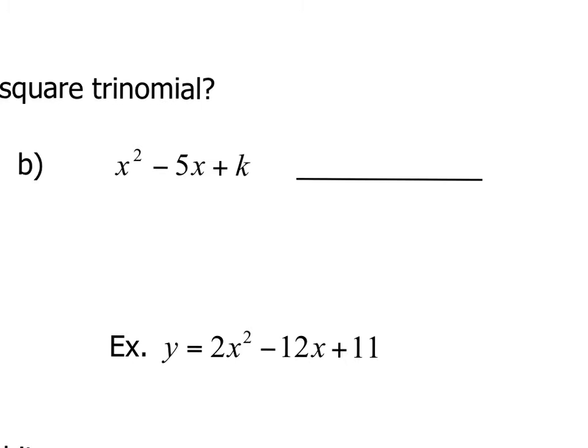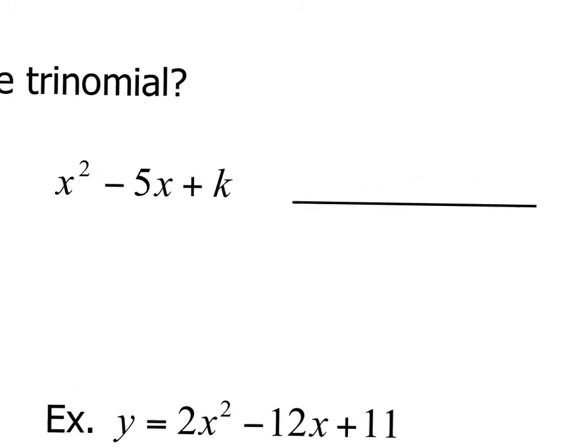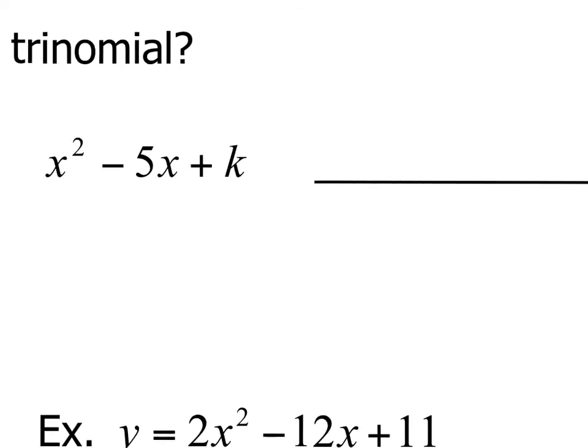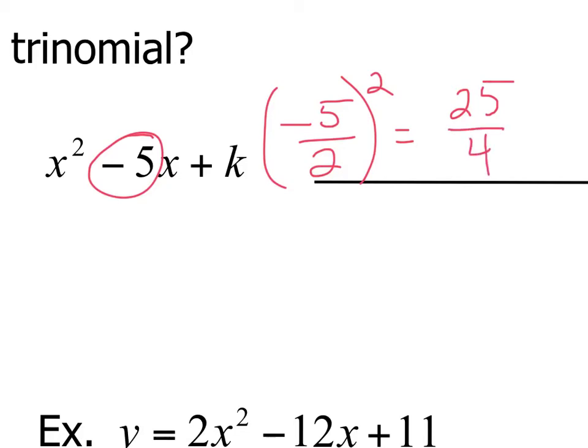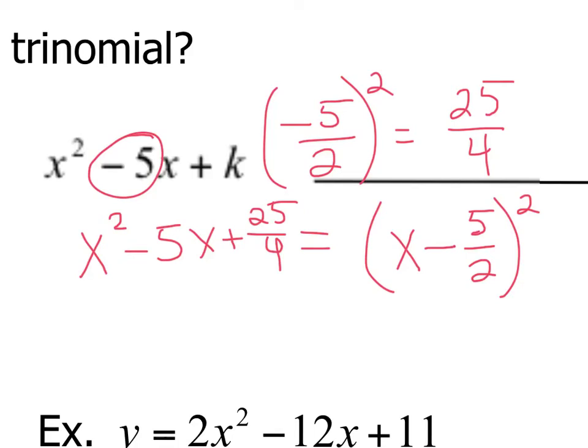Here we've got x squared minus 5x plus k and this isn't as nice as the question before but the process is the same. So we take our b value. So we go minus 5 and then we divide it by 2 and square it. So then we have 25 over 4. So our completed square version is this plus 25 over 4. And when we factor this, we end up with x minus 5 over 2 squared. Now take a second and just notice right here, this number, same as that number.